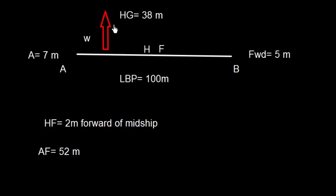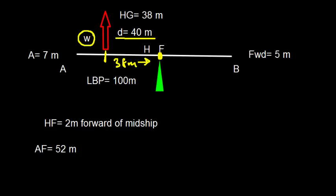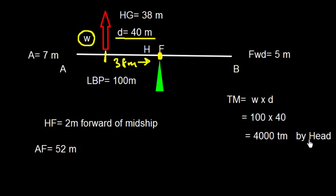We discharge some weight, and the distance of this weight from midship is 38 meters. So the distance from the center of flotation is 40 meters. The ship trims about the center of flotation, and the trimming moment is W × D, where W is the weight discharged and D is the distance from the center of flotation. This gives 100 × 40 = 4000 ton-meter by head, because we discharged from aft.